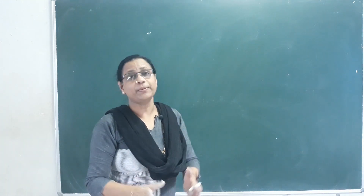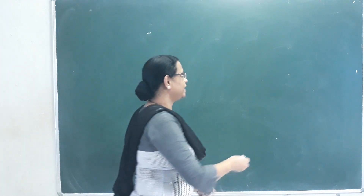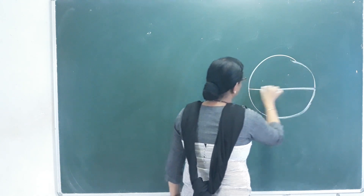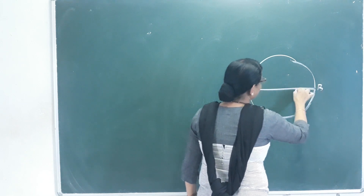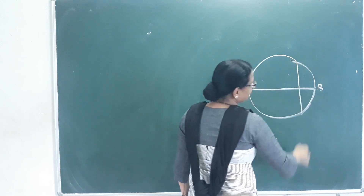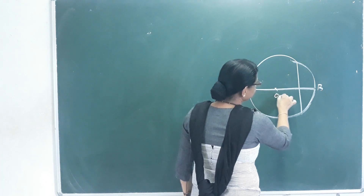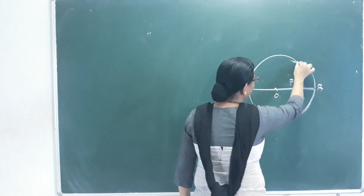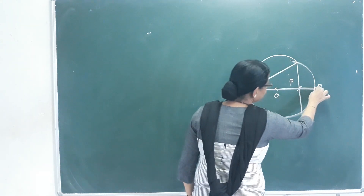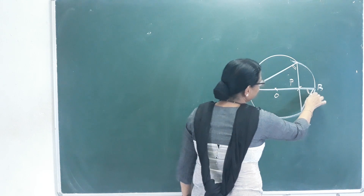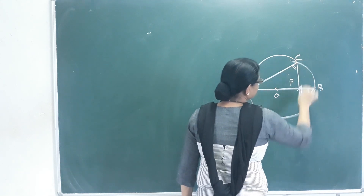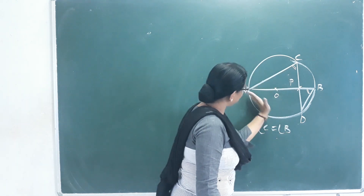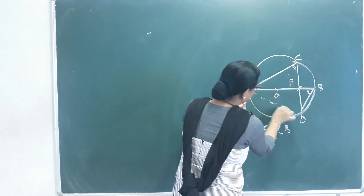Now I am going to tell you about a special case with two chords. One of the chords is the diameter AB. This diameter is a chord. Here is the center, and this point is P. We have the problem here. This is the chord CD. Angle C is equal to angle B; angle A is the same.